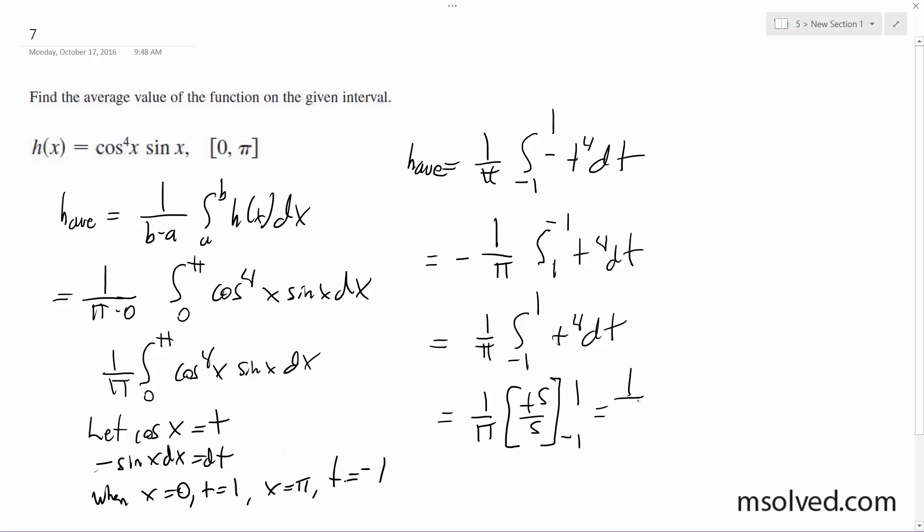And what we end up with is 1 over π, but this ends up just being 1 5th minus negative 1 5th, which ends up being 2 5ths. But what we ultimately end up with is 2 over 5π. All right, so 2 over 5π is the final result.